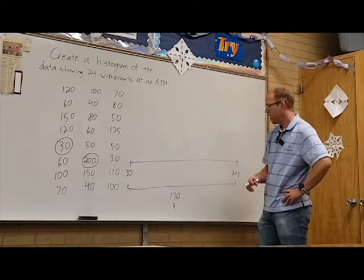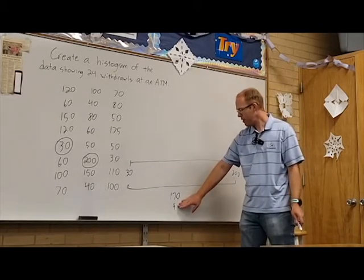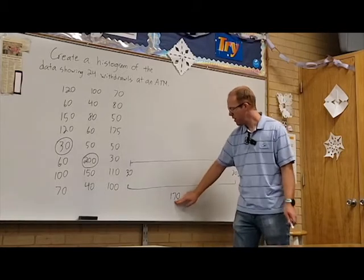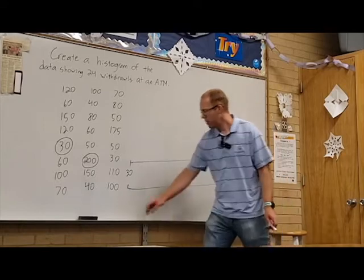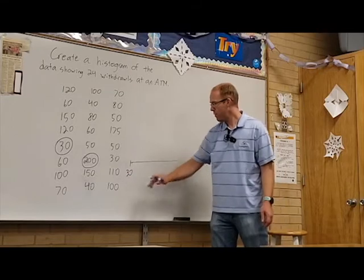9 is a little bit higher than I would like to go with only 24 points, so I'm going to go by 25s instead to make my intervals a little bit less. If I go by intervals of 25, I'm going to go to the next one of 55.